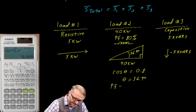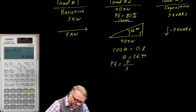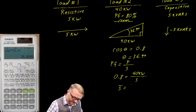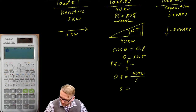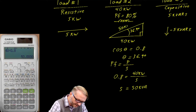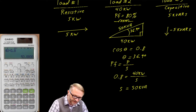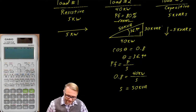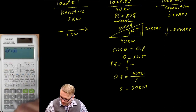We also know that power factor is the ratio of real power to apparent power. So 0.8 is equal to the real power, 40 kW, over the apparent power — that's a scalar, not a vector. So that's 40 divided by 0.8, which gives us 50 kVA. You may recognize this as a 3-4-5 triangle, meaning this side is 30 kVars. You can verify that using the Pythagorean theorem: 40 squared plus 30 squared, take the square root, equals 50.